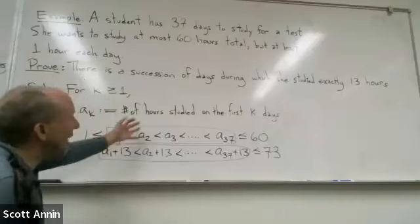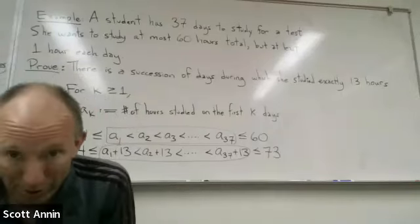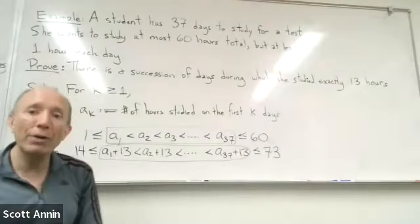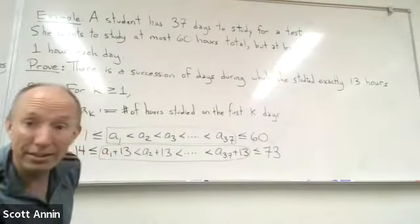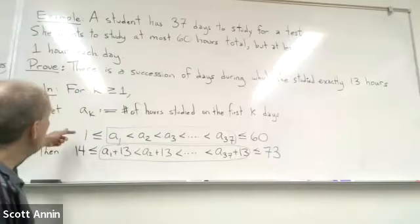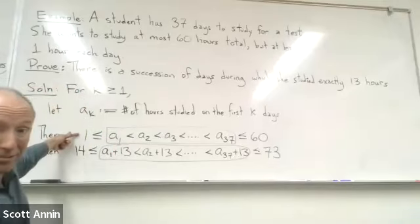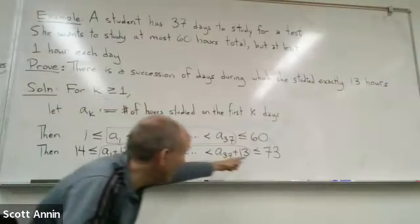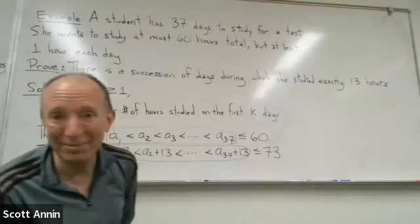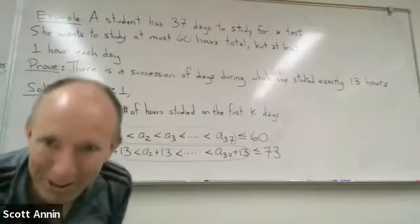But in total now, that is 74 numbers. However, where do those numbers live? They're all at least one. And they're all at most 73. They are integer values.